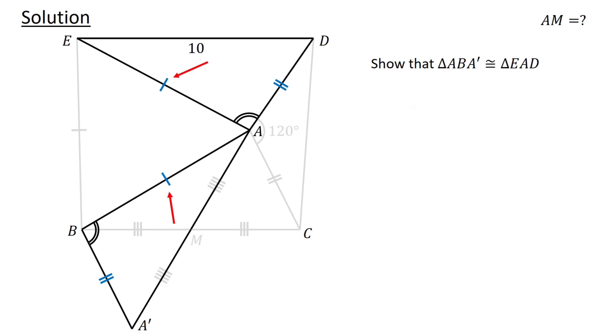As AB equals EA, BA' equals AD, and the included angles are equal, by the SAS congruency test, the two triangles are congruent.